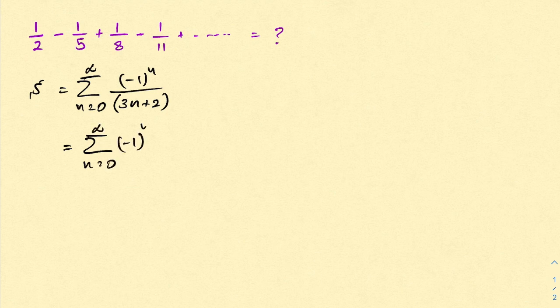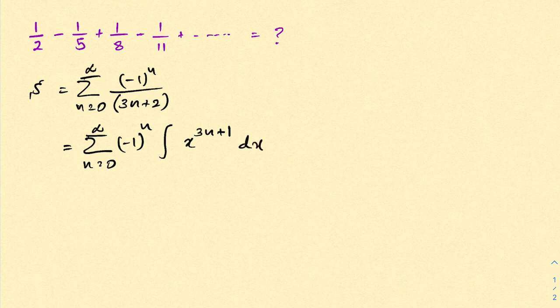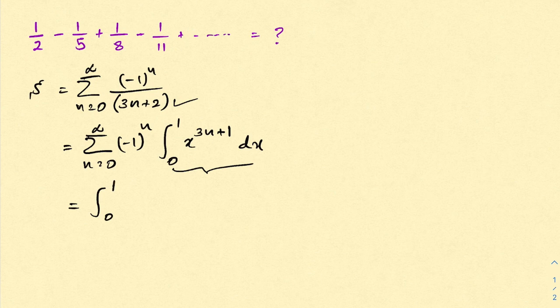As a next step, we write the sum of n equals 0 to infinity of minus 1 to the n. If we integrate x to the 3n plus 1 from 0 to 1, we get 1 over 3n plus 2. Then I am going to interchange the sigma notation and the integral sign, so we have the integral from 0 to 1.